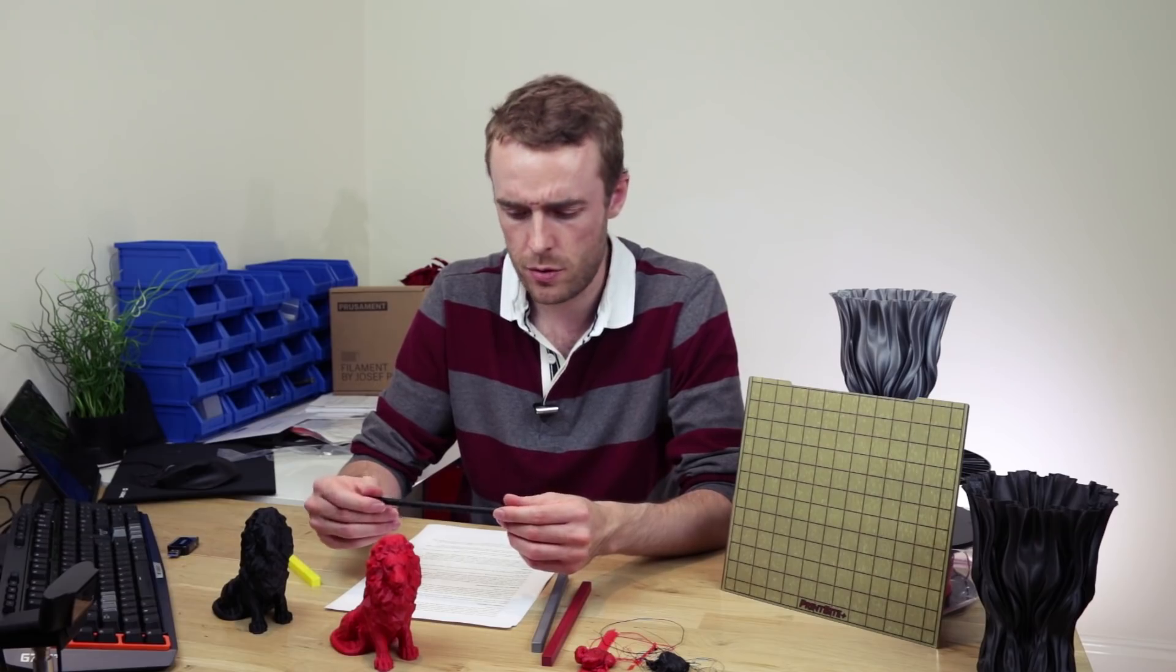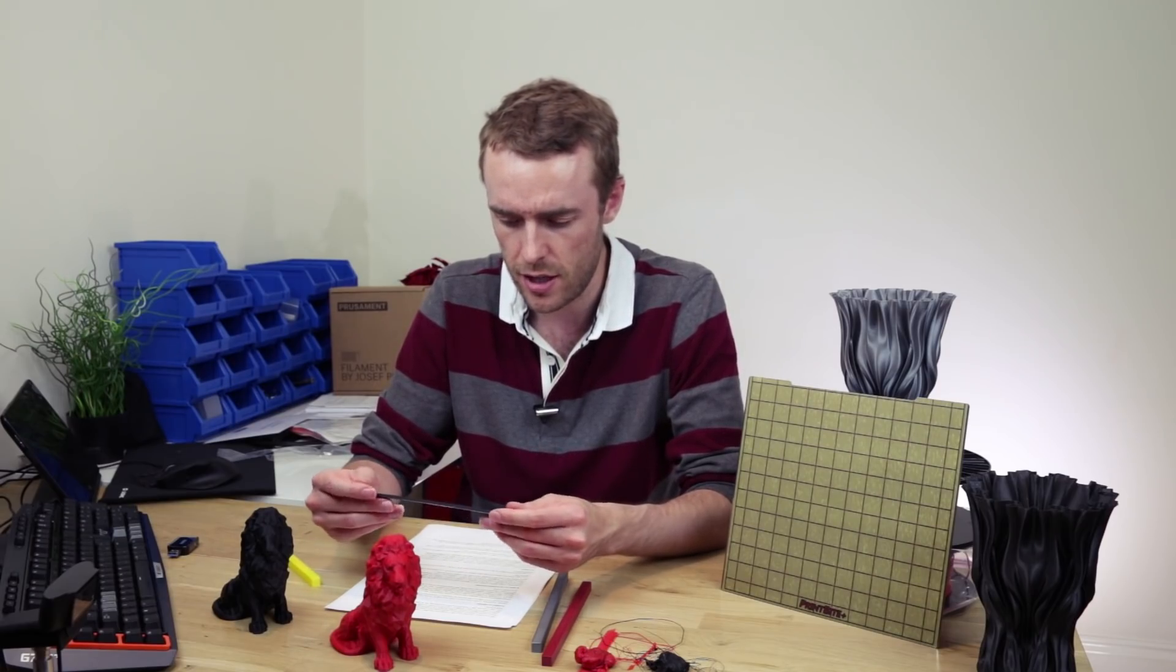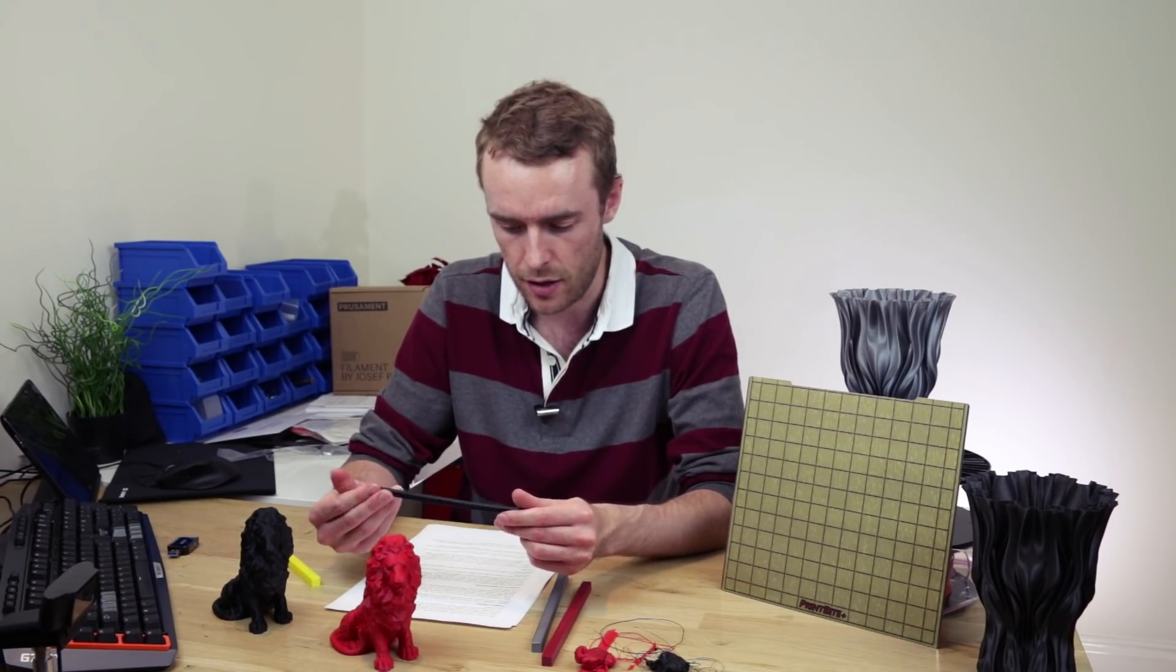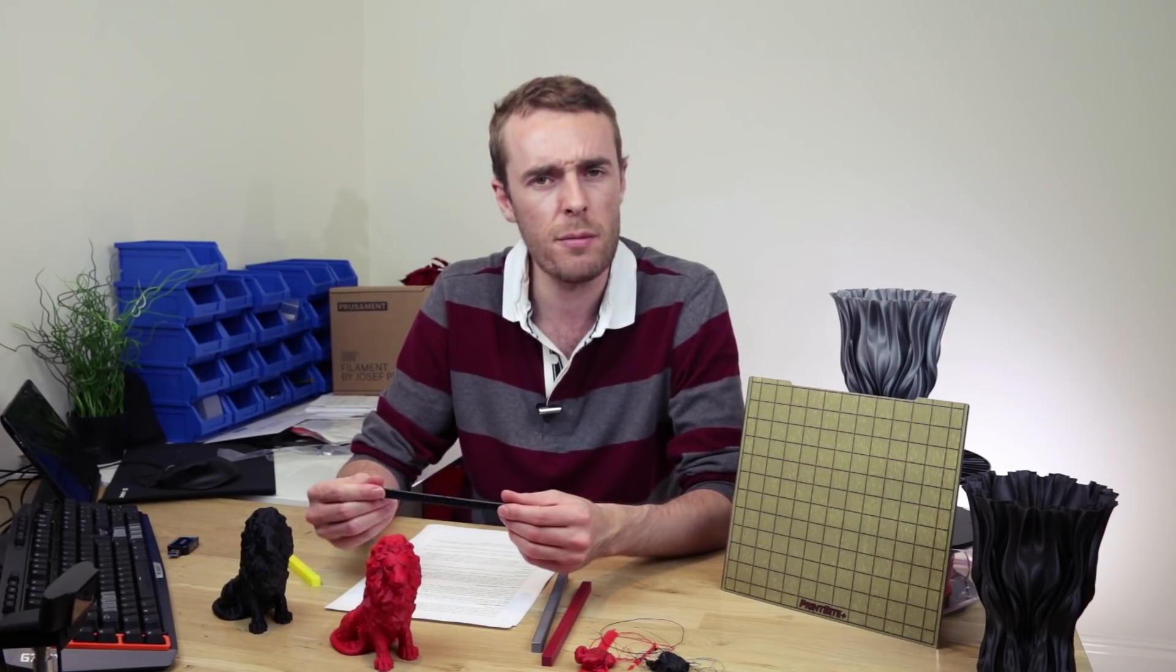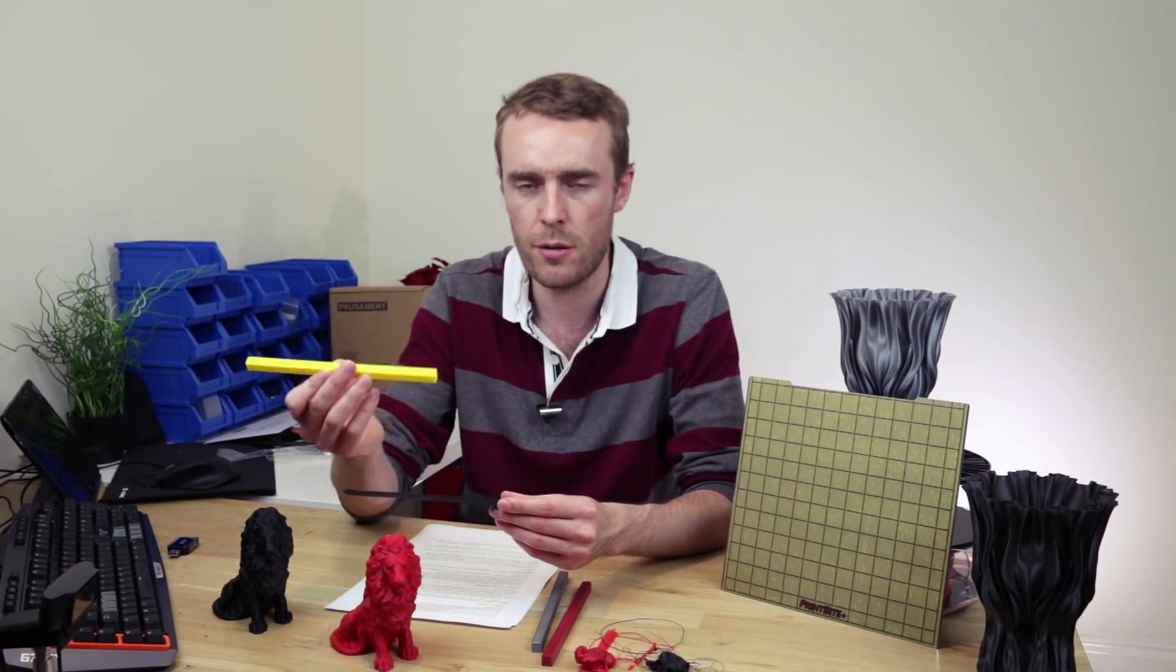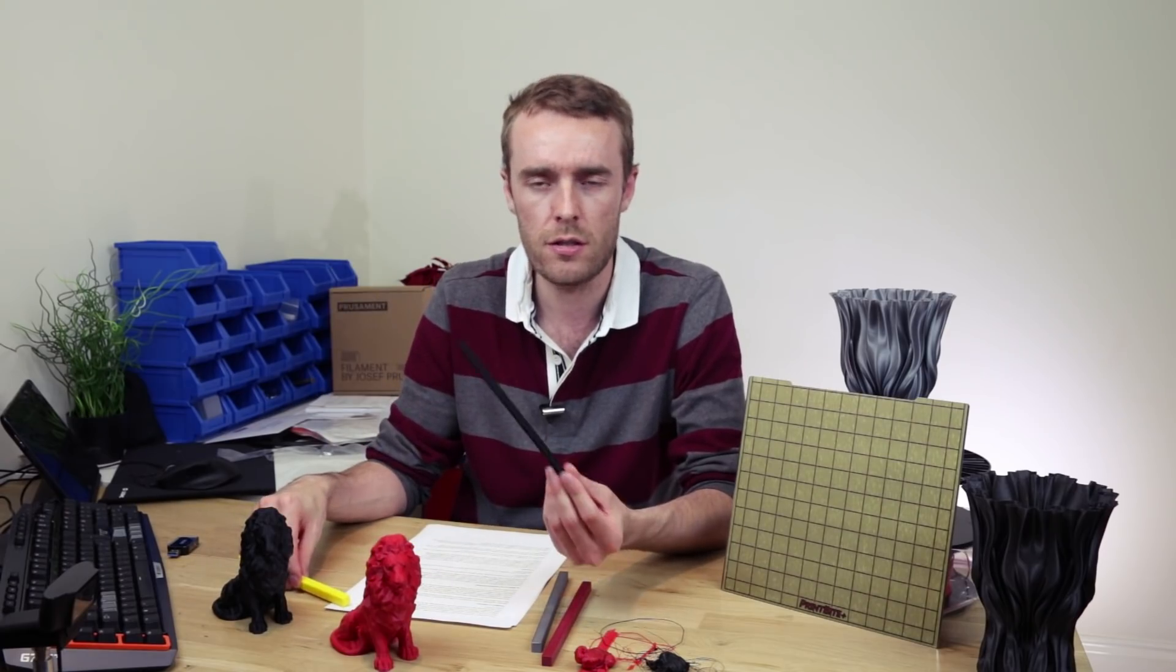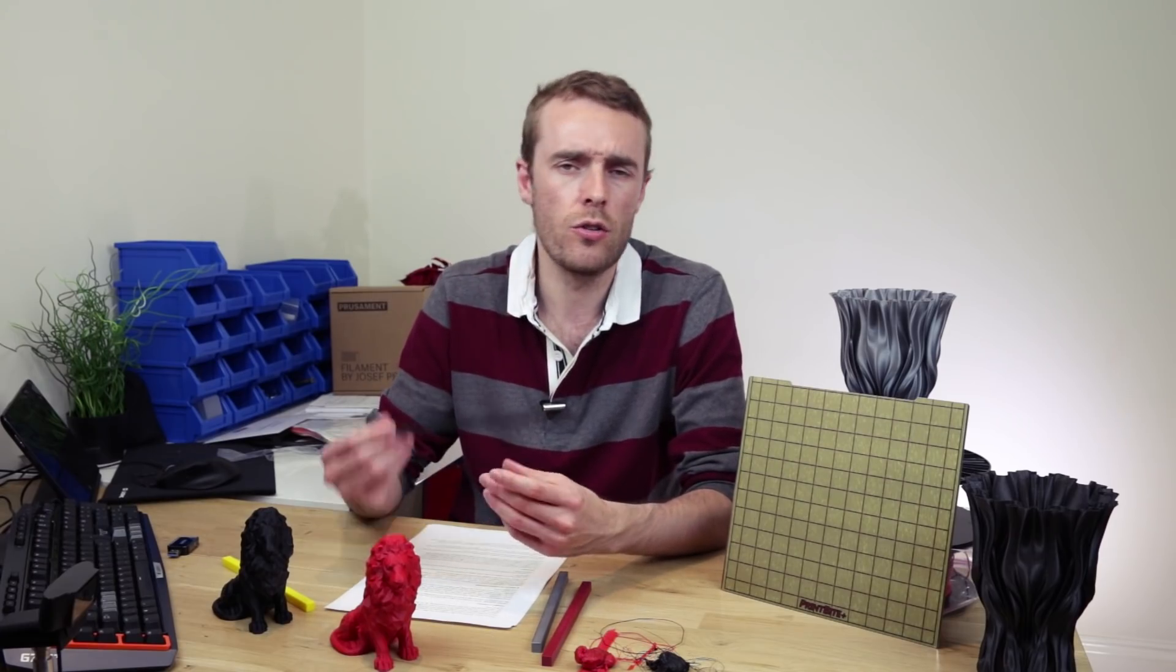I did try a number of times using different filaments, different calibration and cleaning the bed to see if it would stick but didn't have really any luck. Maybe I'm just a bit of an idiot because ASA should generally warp less than ABS, so it does seem a little bit strange that I managed to get ABS to stick pretty much without issue, apart from the cooling thing. But ASA just didn't seem to want to stick down very well.